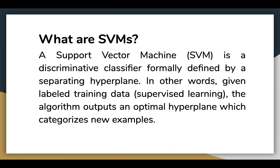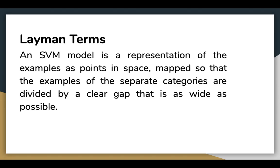So, what are support vector machines? It is a discriminative classifier formally defined by a separating hyperplane. In other words, given labeled training data, the algorithm outputs an optimal hyperplane which categorizes new examples. In simple terms, an SVM model is a representation of the examples as points in space, mapped so that examples of the separate categories are divided by a clear gap that is as wide as possible.